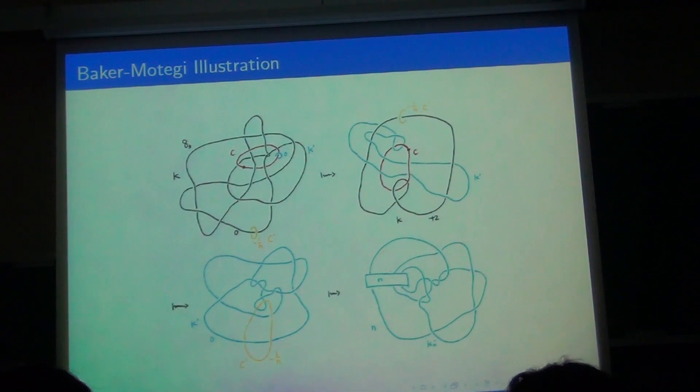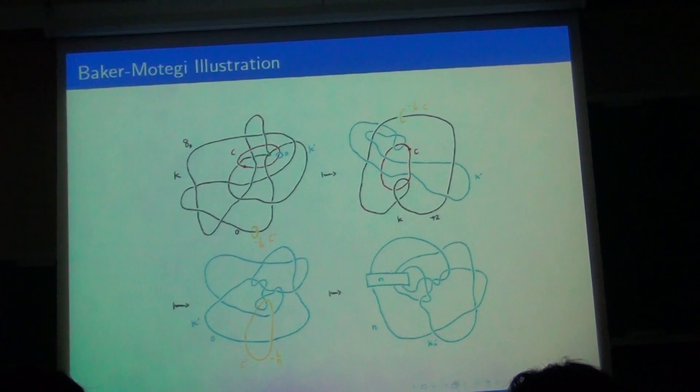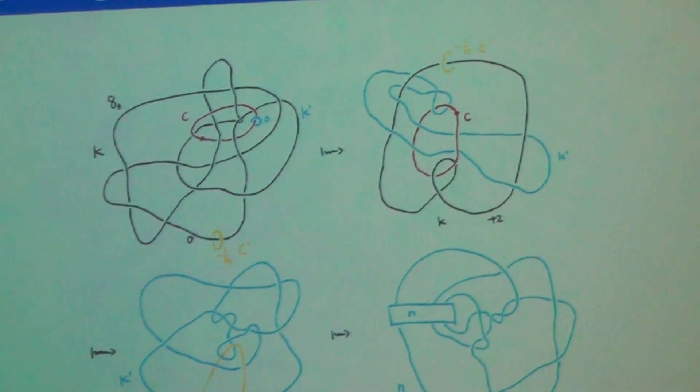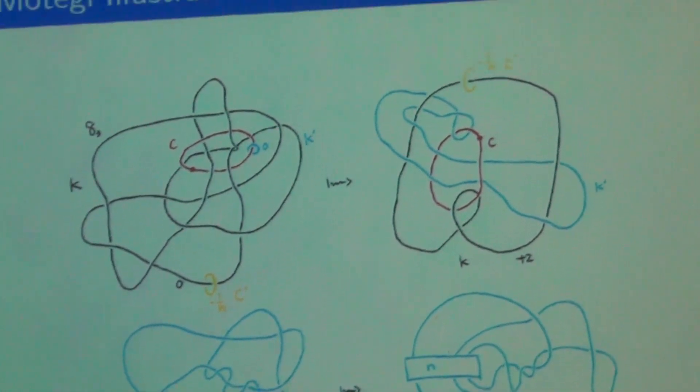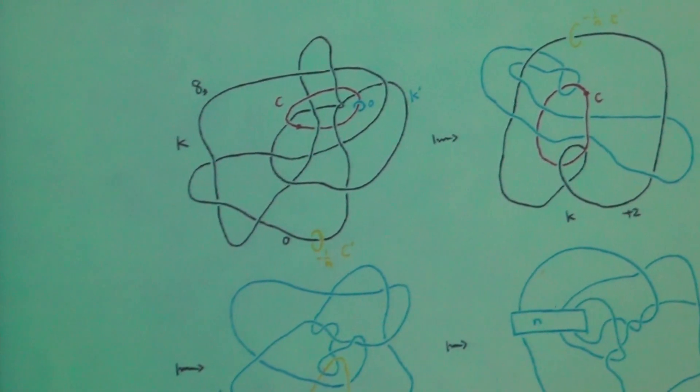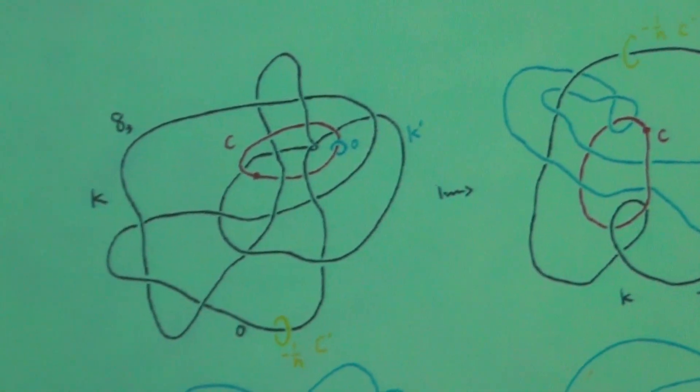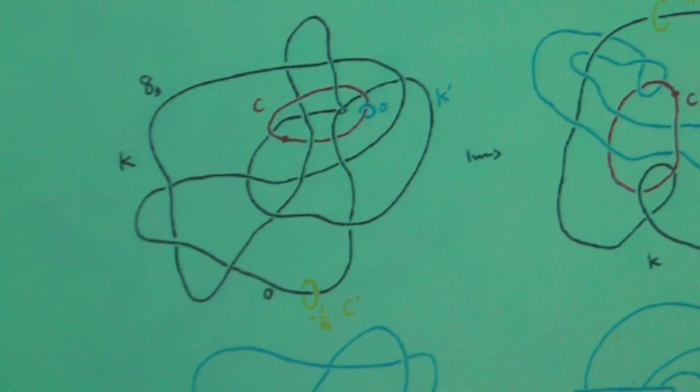So that's a very abstract description, but we were able to develop the following more constructive way of actually finding diagrams for the knots K prime using Kirby calculus. So on the upper left, you see we have this link K union C where K is black and C is red. And we claim that zero-zero surgery is S³, but that's not obvious from the figure.